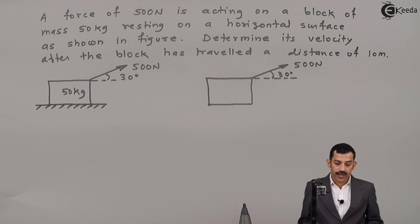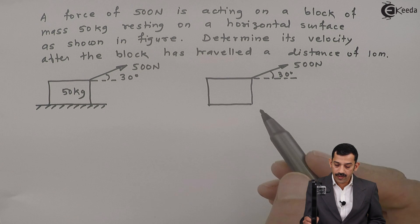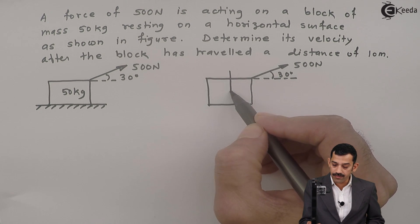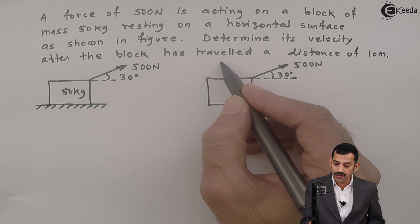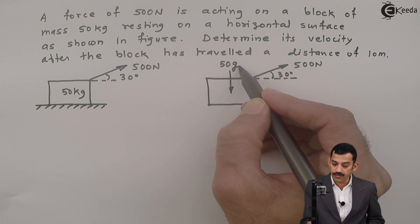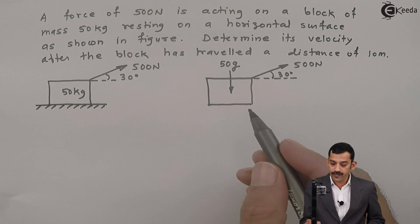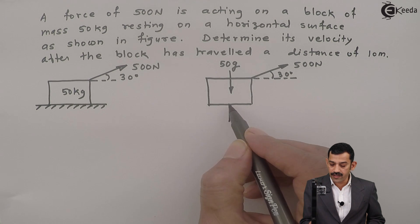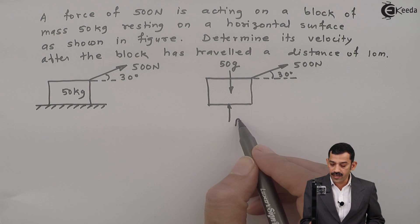Weight of block acts in downward direction. As mass is 50 kg, weight I will write as 50 into G, means acceleration due to gravity. Normal reaction acts in upward direction. This is Rn.